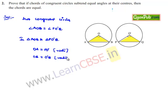These are also radii of the circles. And it is given that angle AOB is equal to angle PO'Q.